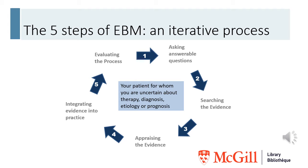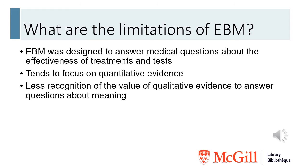Evidence-based medicine is a process that involves five steps. It is an iterative process, meaning that it does not necessarily flow in a straight line. The first step is to figure out what you want to know and ask it clearly so that you can then move on to step two, which is where you search for evidence that answers the question. Searching may lead you to change or refine your question. Once you have found the evidence, you move on to step three, where you evaluate the quality and relevance of what you found, and this may lead to changes in your searching. During steps four and five, you use the evidence to inform your decisions about patient care, and then evaluate the whole process and find ways to improve next time. Your patient is always at the center of this process. Evidence-based medicine was designed to answer medical questions about the effectiveness of treatments and tests, and for this reason it tends to value quantitative evidence such as randomized control trials and meta-analyses more than qualitative evidence.